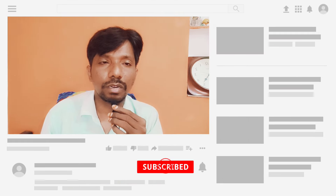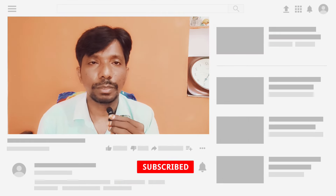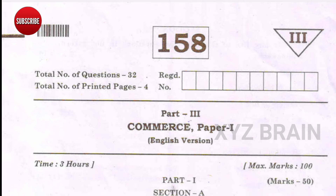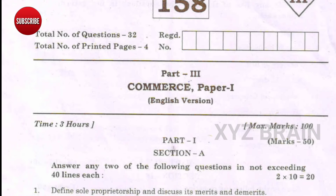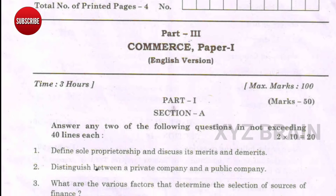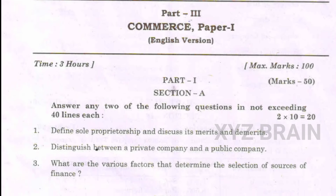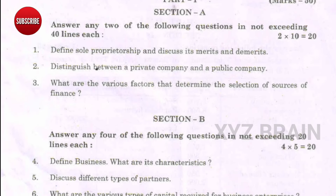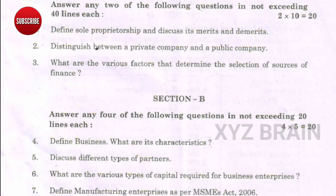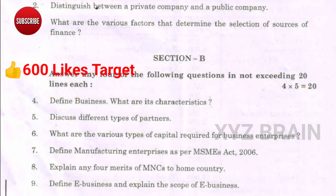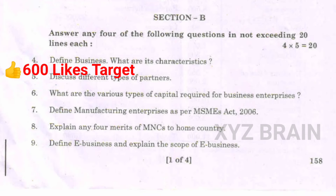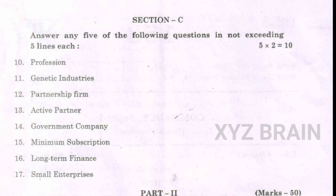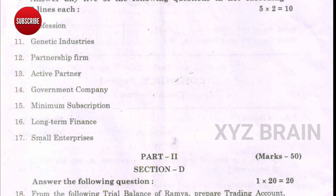Hi friends, welcome back to our channel XFJBrain. AP Inter Public Performance First Year Commerce Question Paper. Here is the question paper — you can choose the question paper, you can choose the answer. Commerce is one of the most challenging subjects, alongside science, physics, arts, and chemistry.